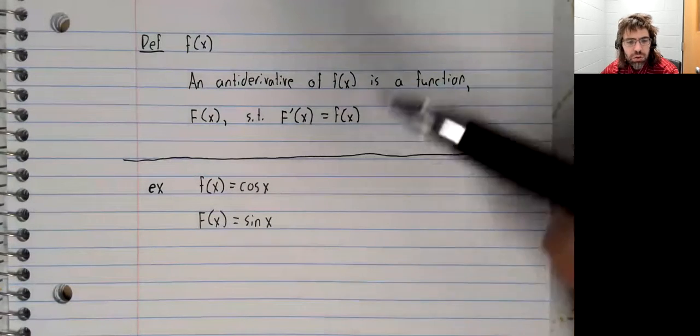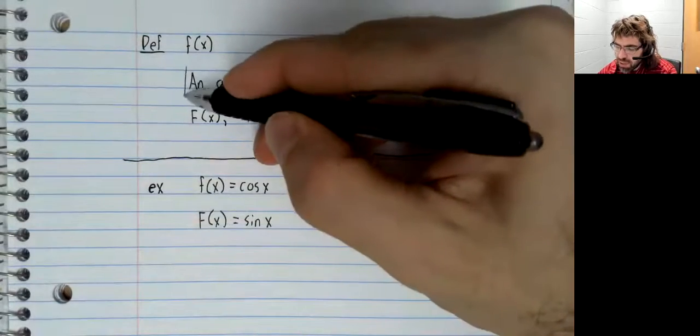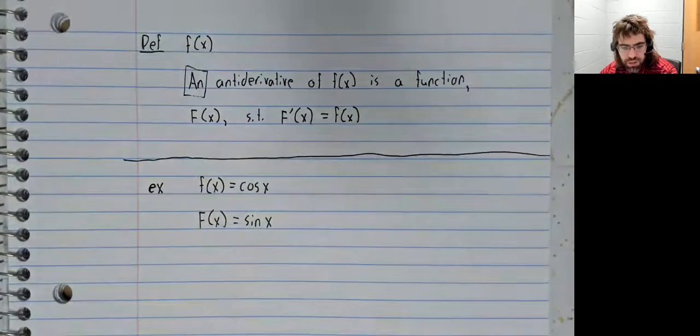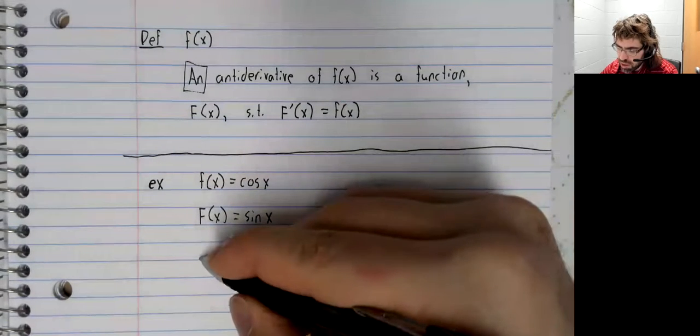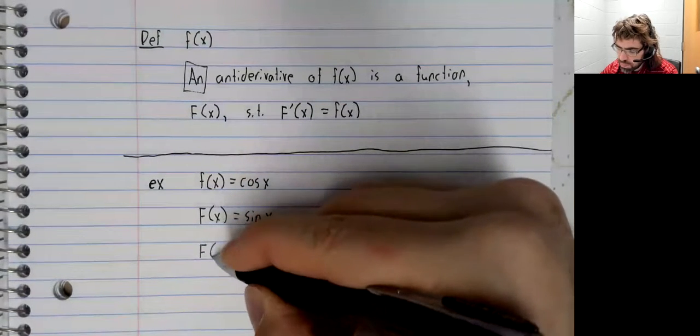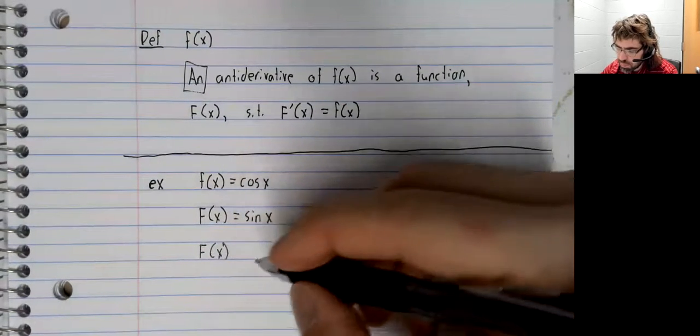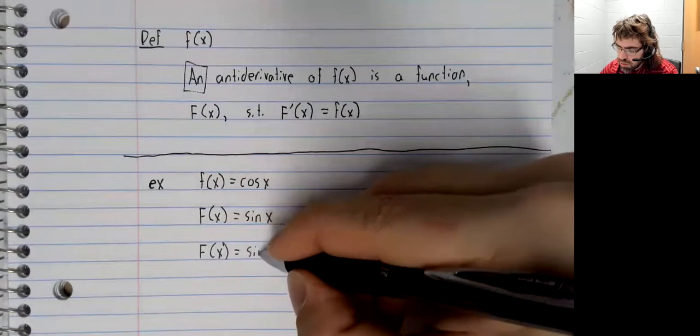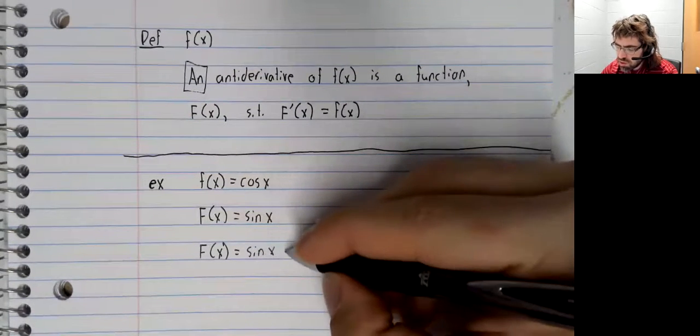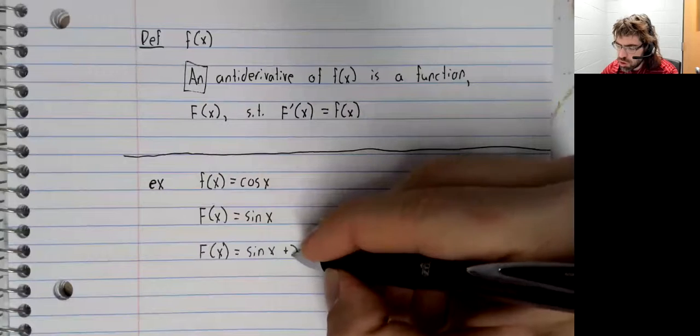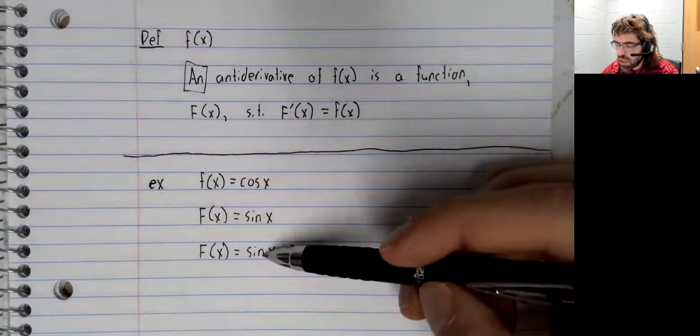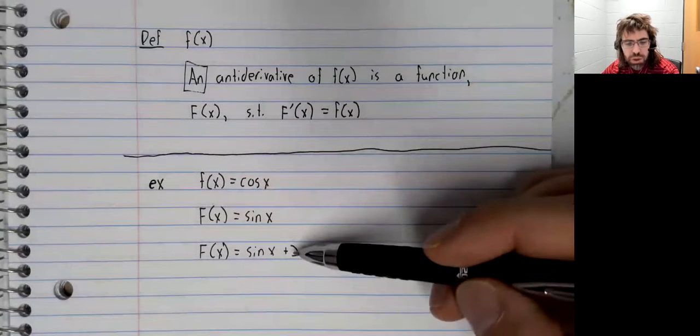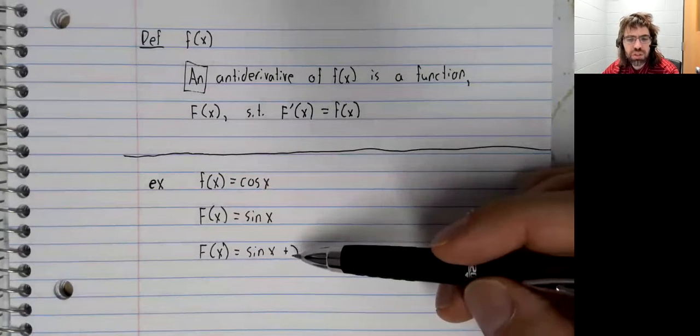Now you'll notice I say an antiderivative instead of the antiderivative. The sine of x plus two also has the cosine as a derivative. The sine turns to the cosine, the two turns to zero.